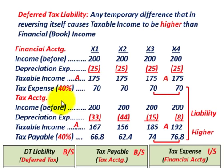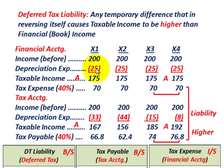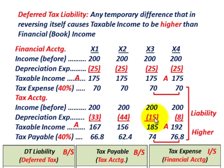Now let's look at the tax accounting difference. We have the same income, but for tax accounting we can use accelerated depreciation, giving us greater depreciation in the early years. The depreciation figures are: $33,000 in year one, $44,000 in year two, $15,000 in year three, and $8,000 in year four.